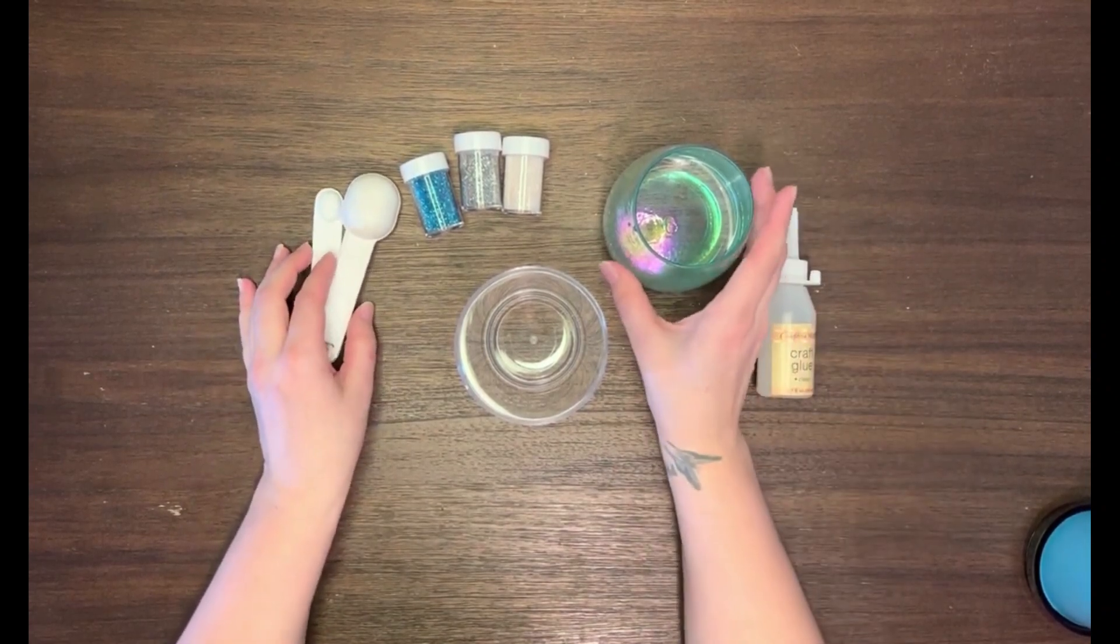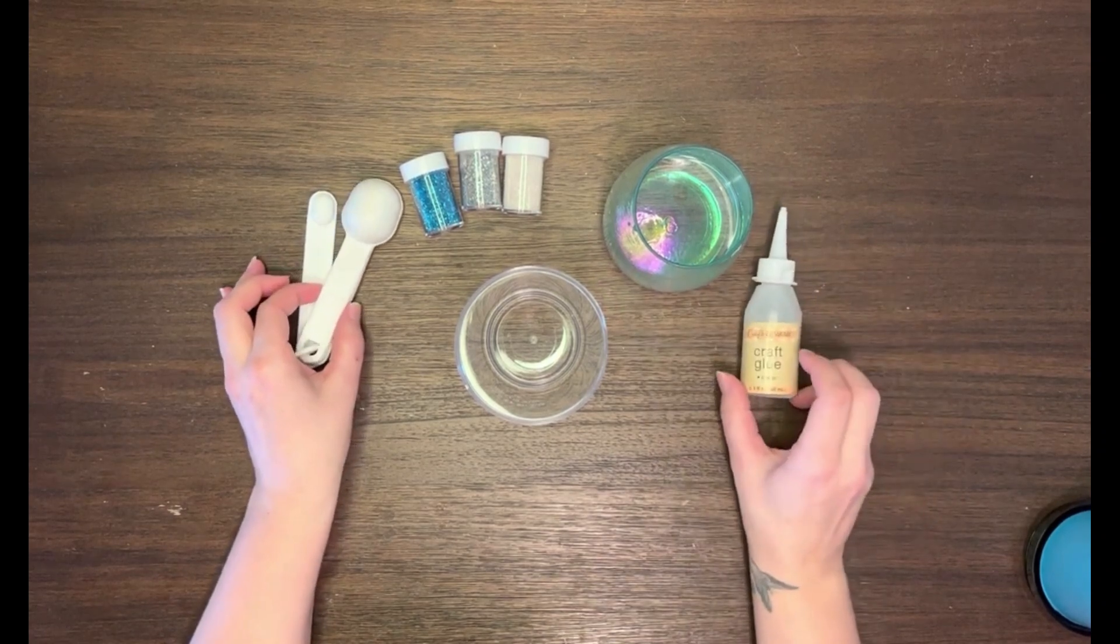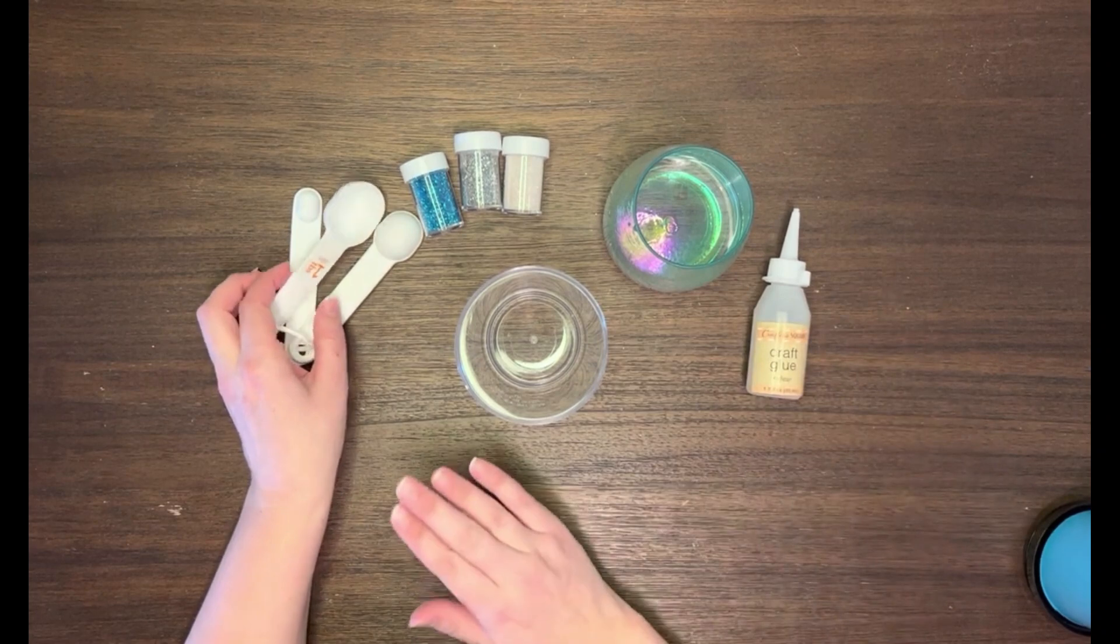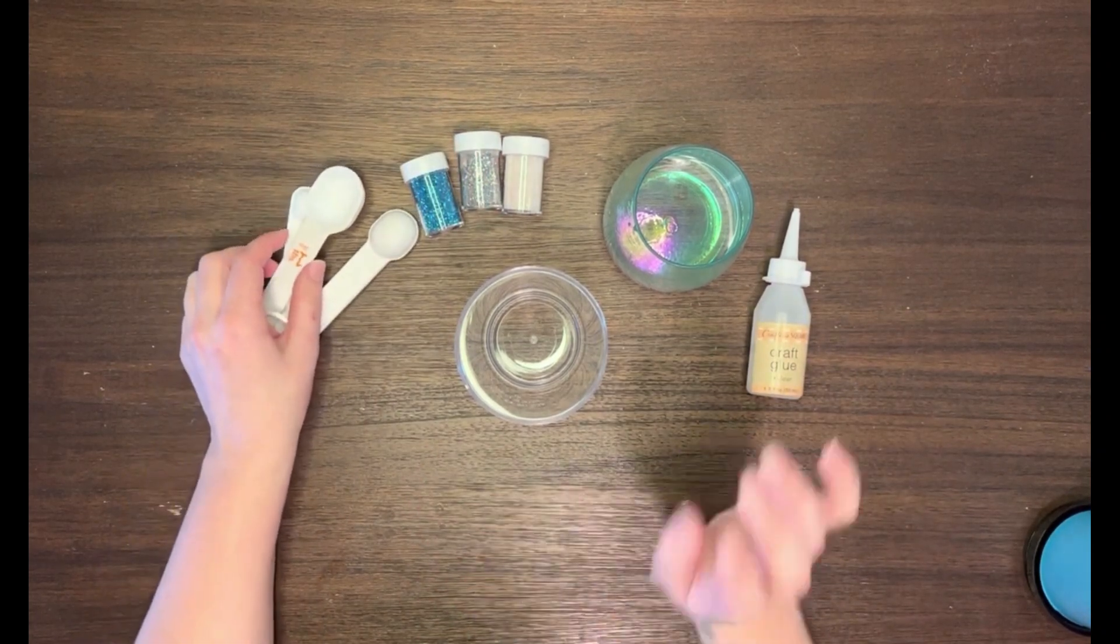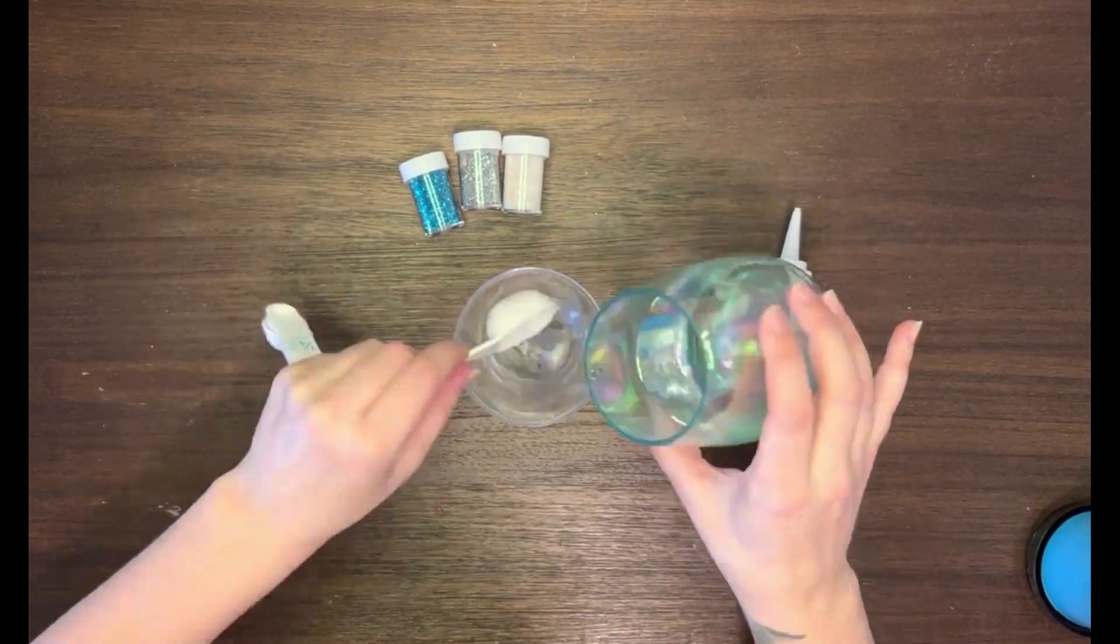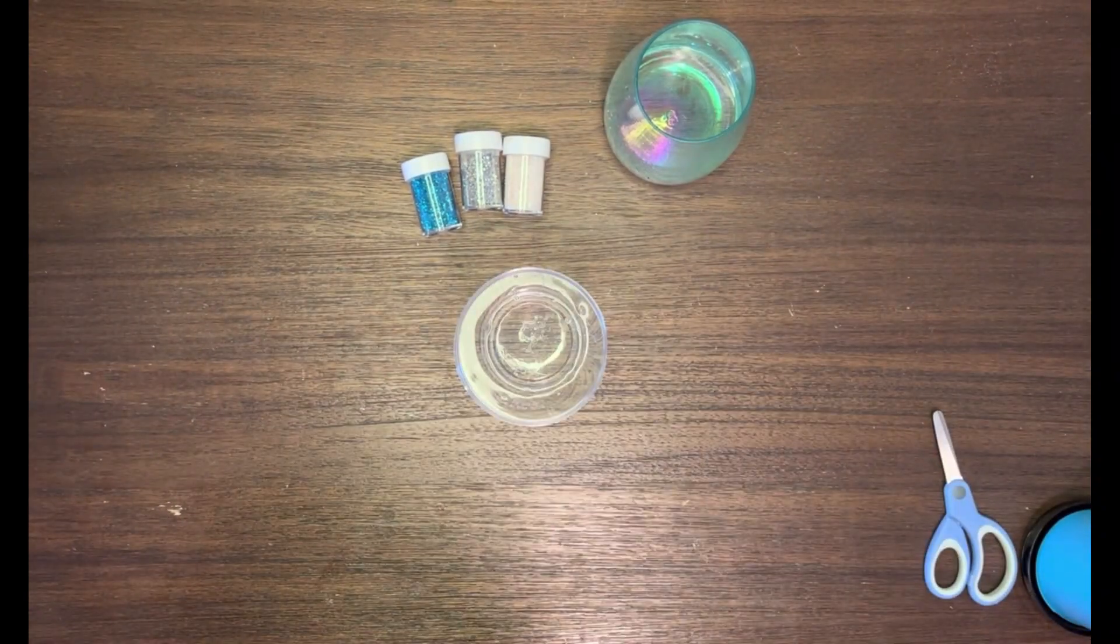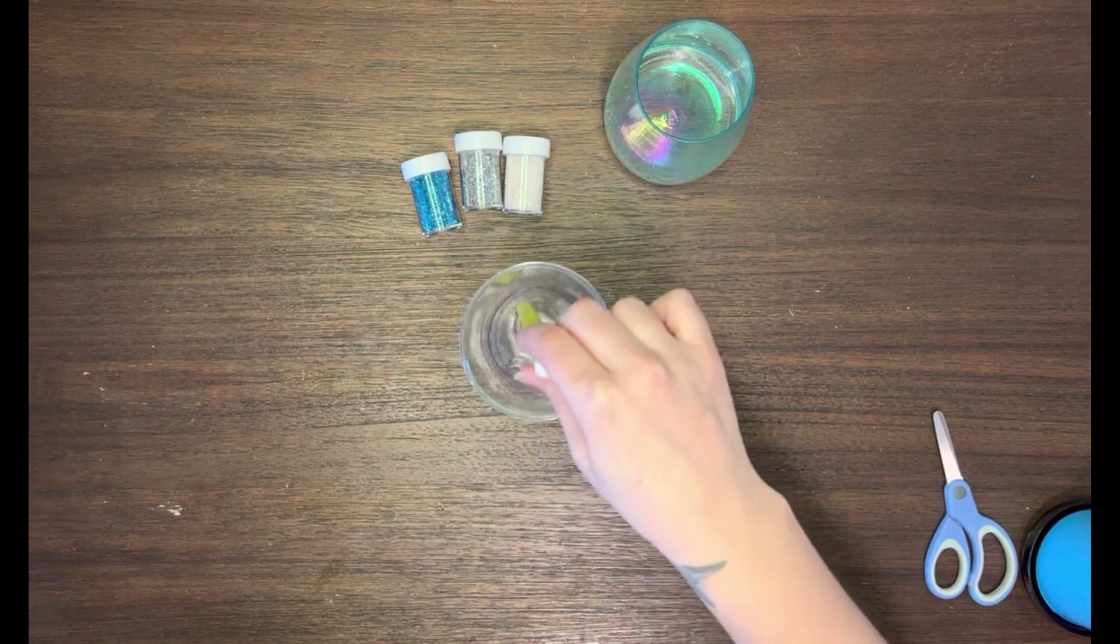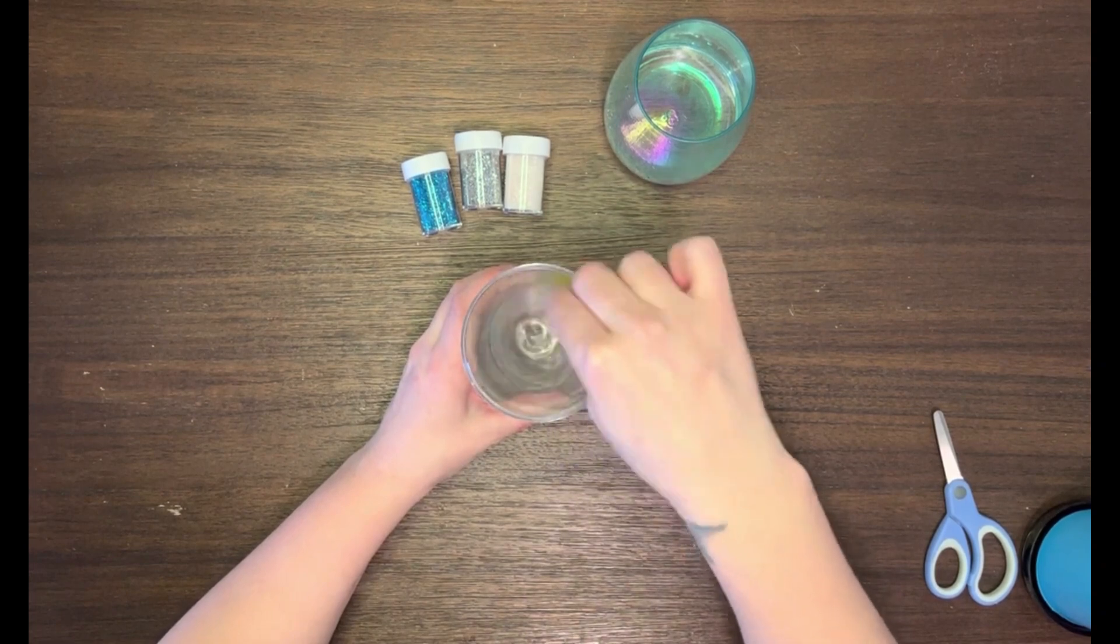For your mixture, you'll need water and glue. I like to do three tablespoons of water and two tablespoons of craft glue—five total. Make sure you remember to put your sparkles in. I'll add the water and glue, then we'll put the sparkles in after. Now that you have your mixture, mix it up nice and well, then we'll add the glitter.